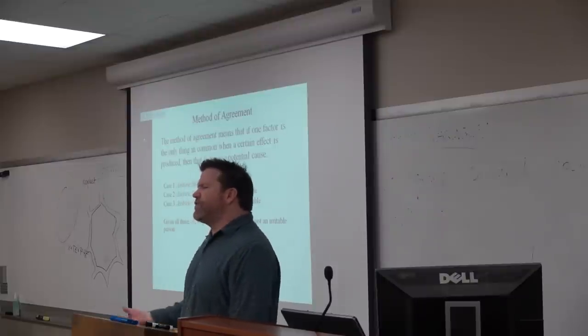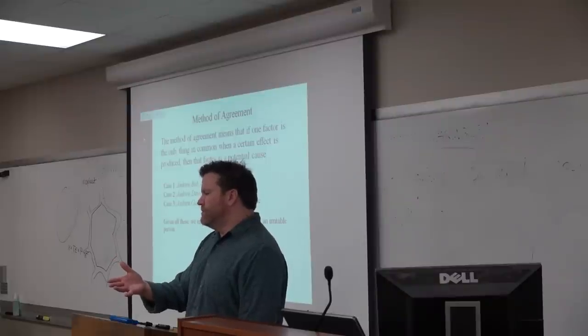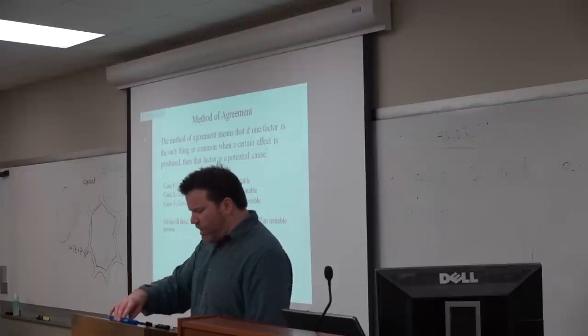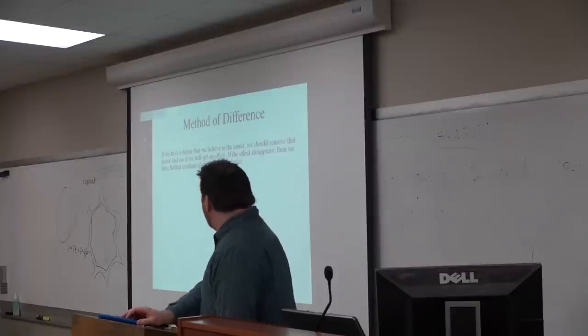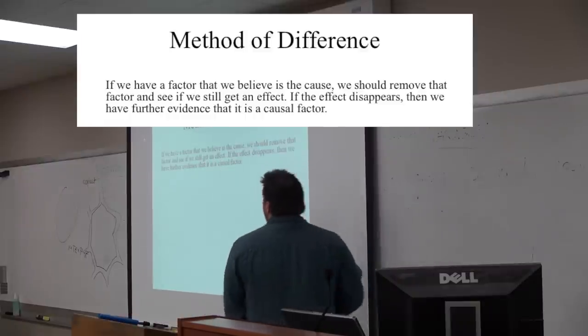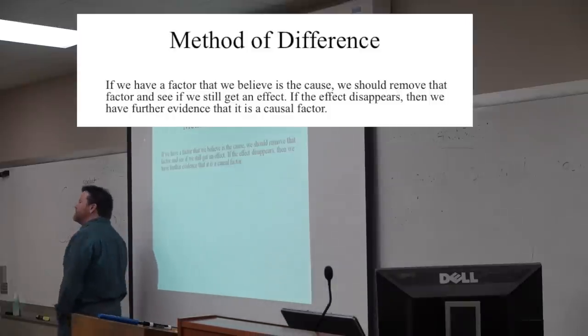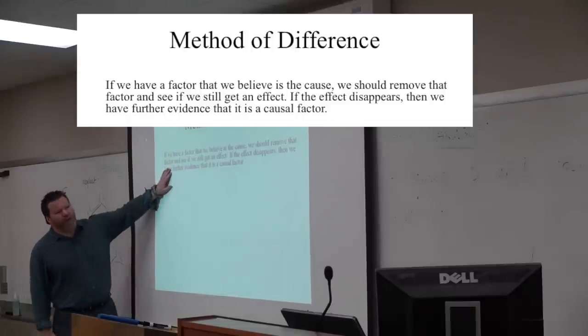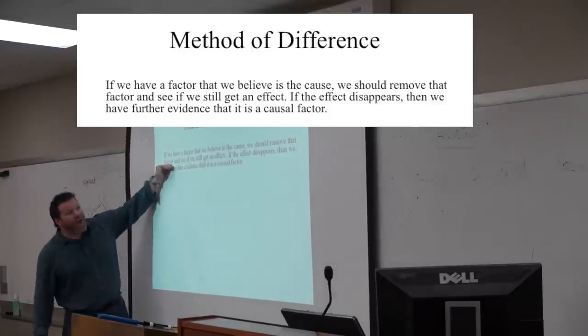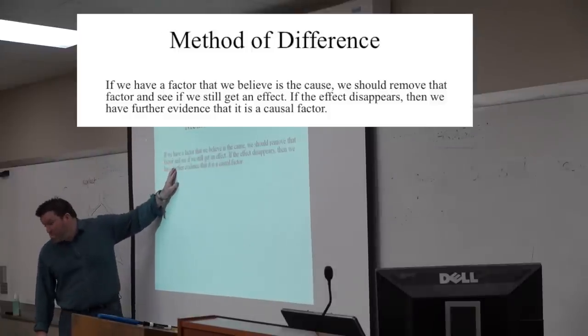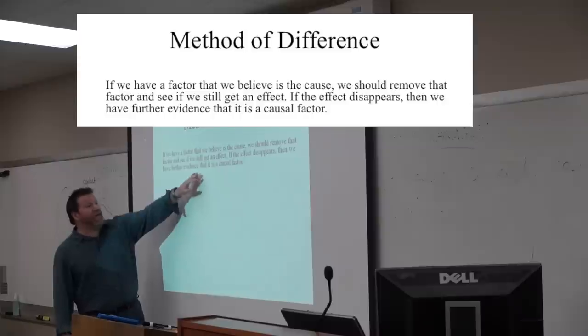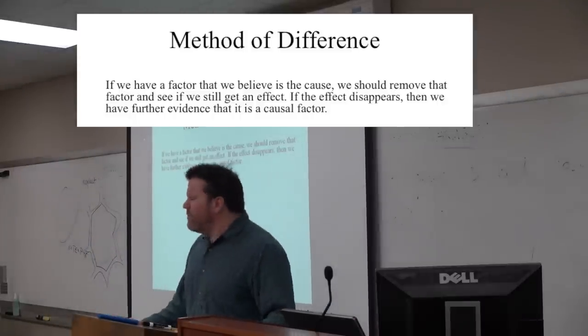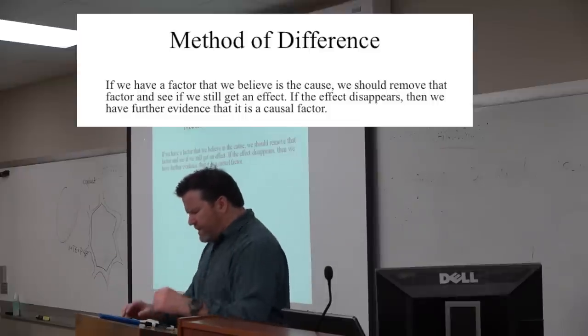What do you imagine the method of difference is going to be? Yeah, you look for the factor that's not in common. So the method of agreement is you look for the one thing that is. The method of difference is if you believe that a factor is a cause, you look to see what happens when you remove that factor. If you remove it and still get an effect, that's not it. But if you remove it and the effect disappears, maybe you're on to something.